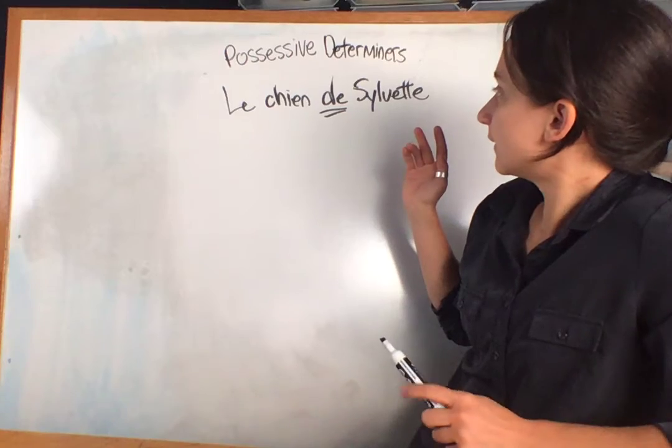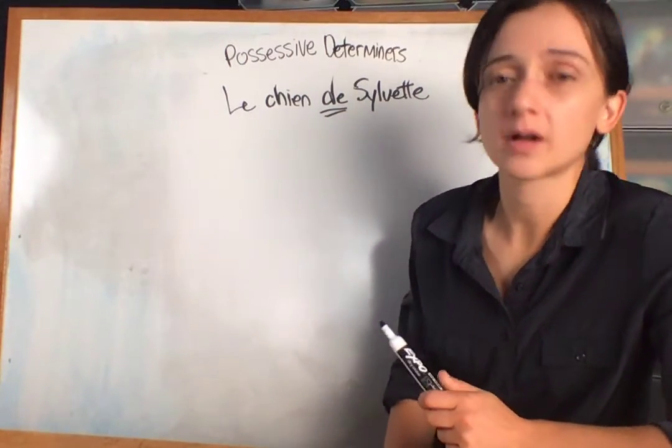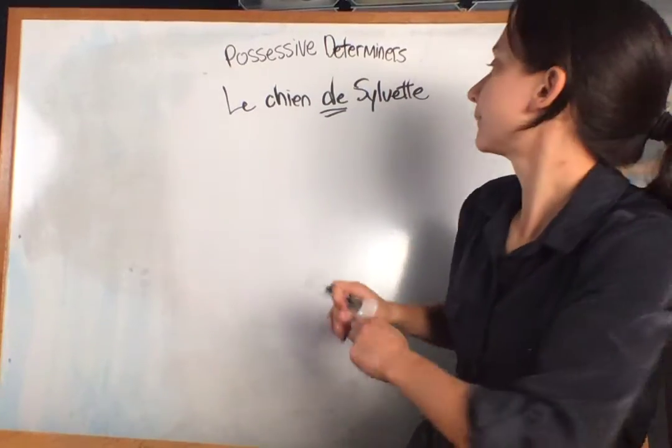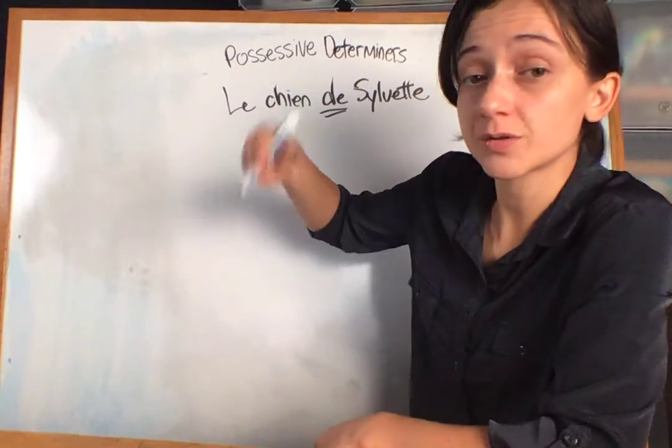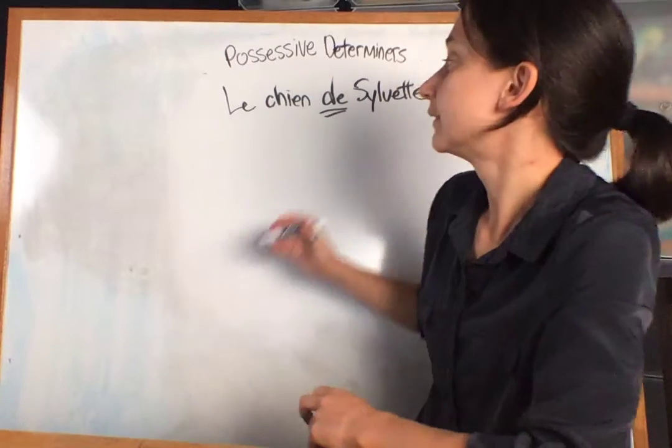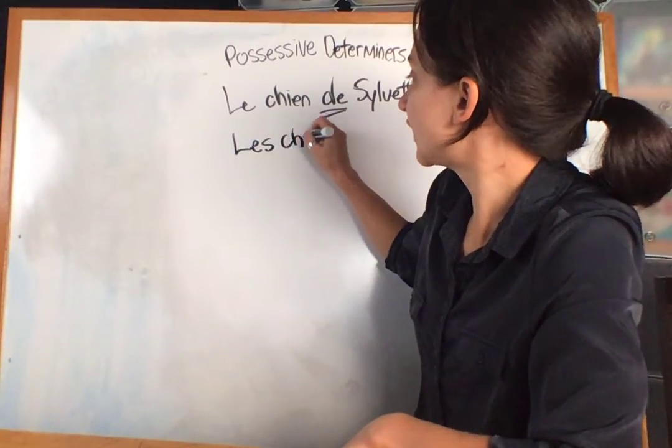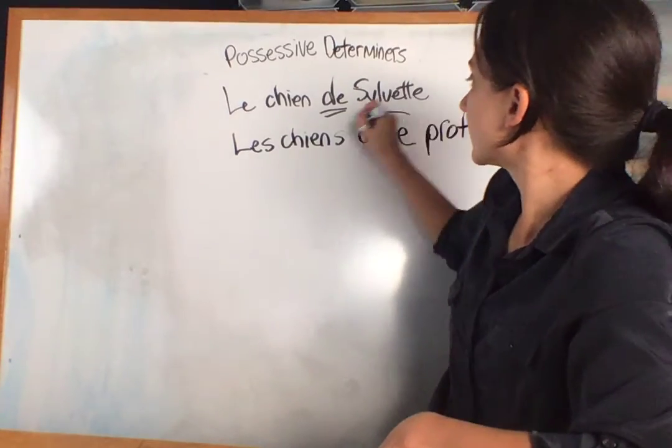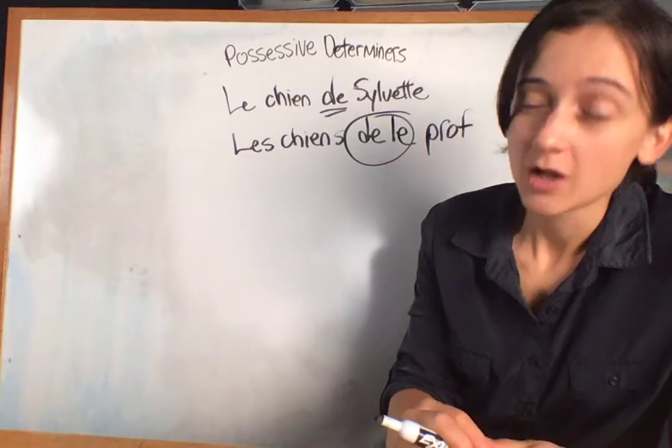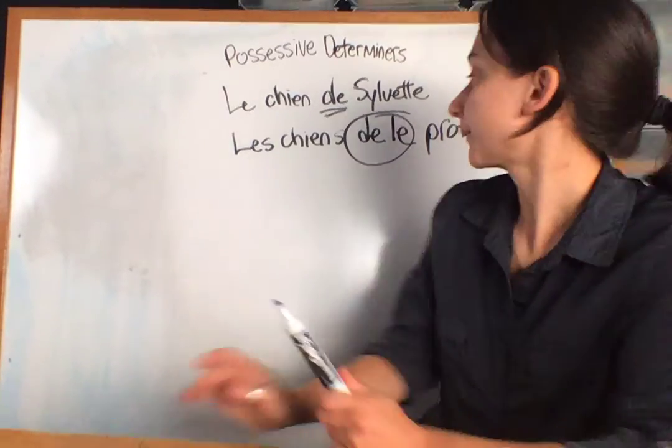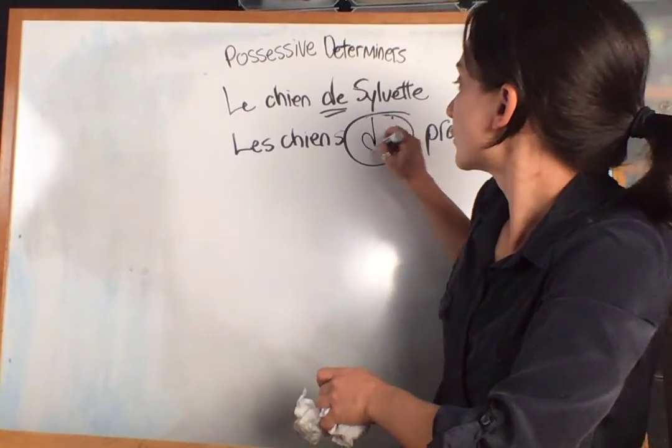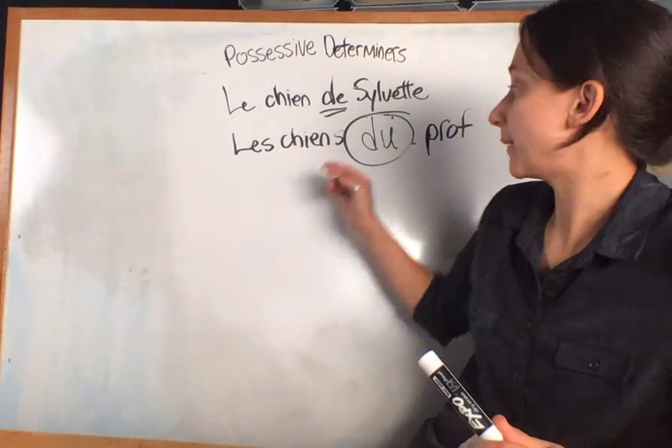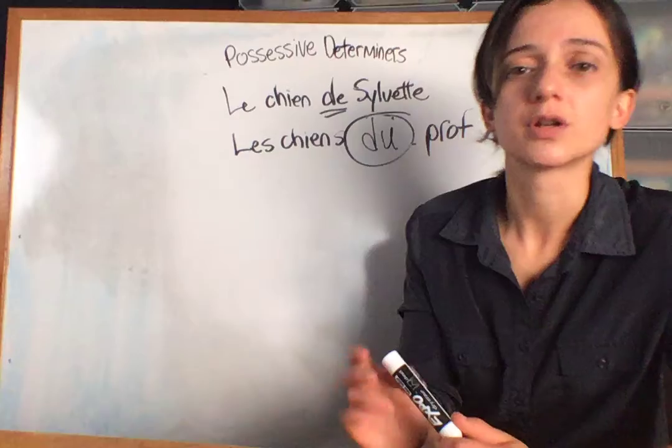Now, sometimes you might see, how about the teacher's dogs. You see the teacher's dogs at home. The teacher's dogs. So, you would say, les chiens, the dogs of the teacher. Now, here is the little thing that I need to point out here. You cannot say de le. You must make a contraction with this. You must put them together. So, you must say, les chiens du prof. So, don't get confused. If you see du, don't get confused. That just means de le. That means of the. The dogs of the teacher or the teacher's dogs.